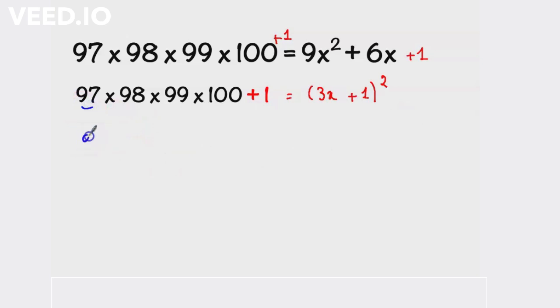Now we will take a equal to 97, so the left hand side turns into a multiplied by (a + 1) multiplied by (a + 2) times (a + 3) plus 1 equal to (3x + 1)².